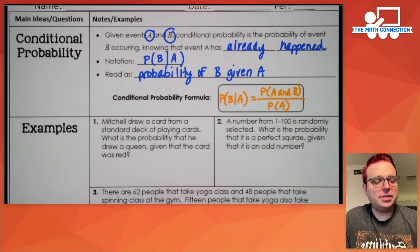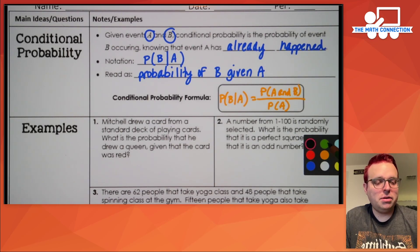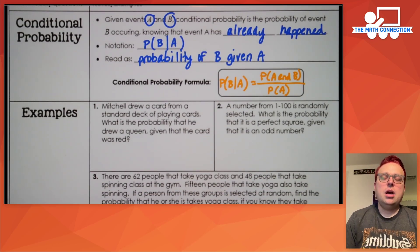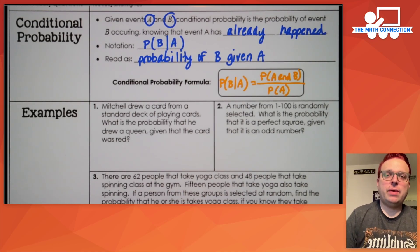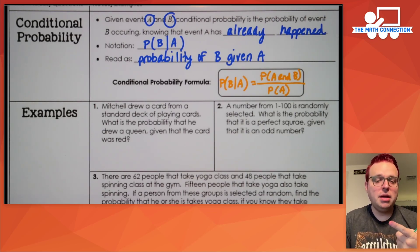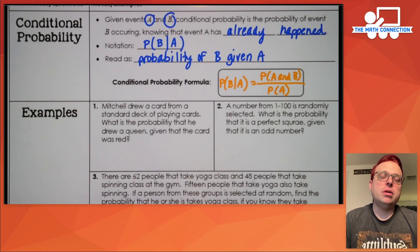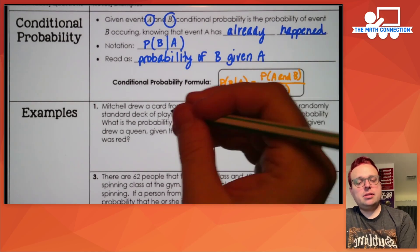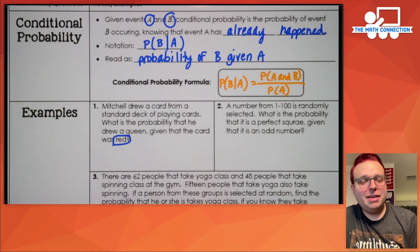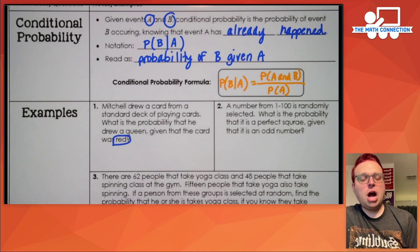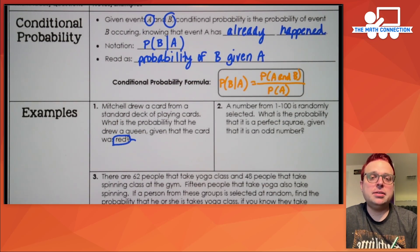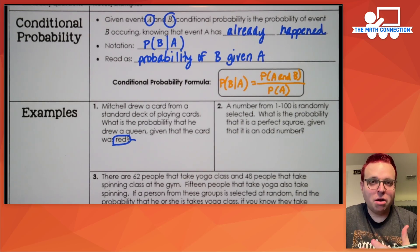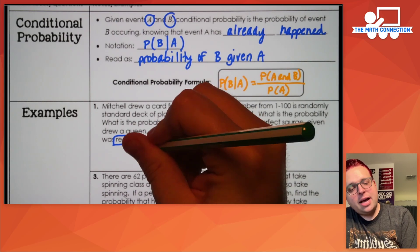Let's do our first example. Mitchell drew a card from a standard deck of playing cards. What's the probability that he drew a queen given that the card was red? The 'and' part is easy to figure out because you need to find the probability that the card is both a queen and that it's a red card — that'll be your numerator. The denominator is the part you're given. Since the card was red, remember the given thing goes in the denominator.